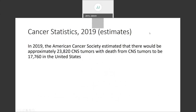So, brain tumors — CNS oncology. In 2019, the American Cancer Society estimated there would be approximately 23,820 CNS tumors, with deaths from CNS tumors predicted to be about 17,716 in the United States. This is an order of magnitude fewer tumors than the big four — colorectal cancer, lung cancer, prostate cancer, and breast cancer — however, still highly impactful and highly destructive.